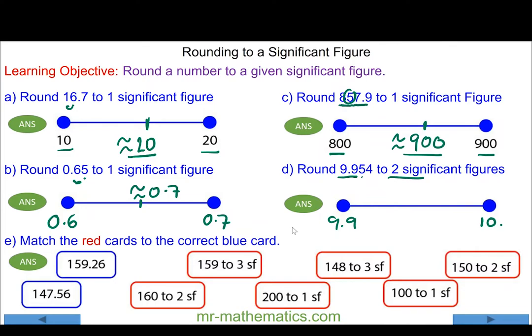9.95: the five does round up the nine to a 10, which in turn rounds up the following nine to a 10 as well. So 9.954 becomes approximately 10 to two significant figures.